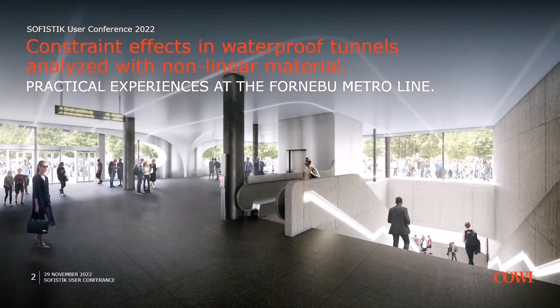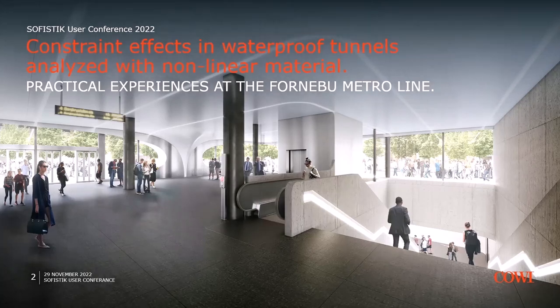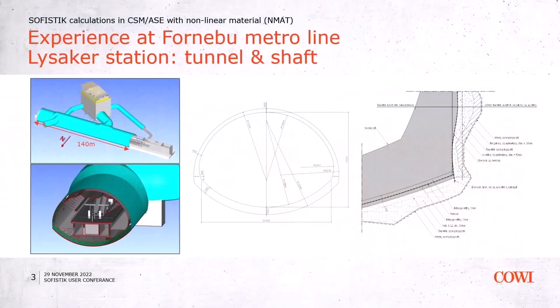Fornebo metro line is an 8 km line between the centre of Oslo, from Majorstuen to Fornebo. It has 6 stations. One of the stations is Lisaker, very close to here, and it's where I will focus the presentation. This is how the structure of Lisaker looks.